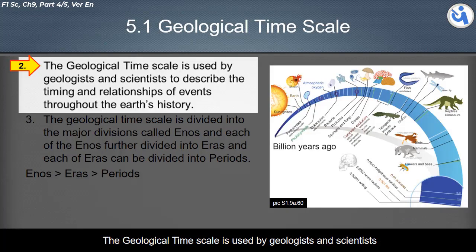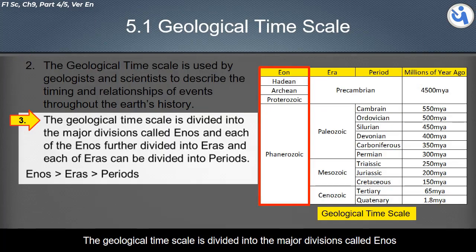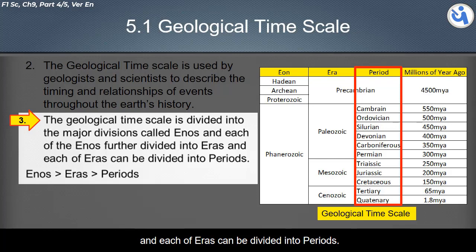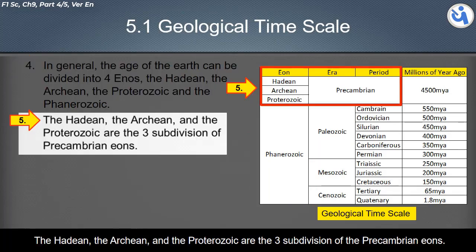The geological time scale is used by geologists and scientists to describe the timing and relationships of events throughout the earth's history. The geological time scale is divided into major divisions called eons, and each eon is further divided into eras, and each era can be divided into periods. In general, the age of the earth can be divided into four eons: the Hadean, the Archaean, the Proterozoic, and the Phanerozoic. The Hadean, Archaean, and Proterozoic are the three subdivisions of the Precambrian eons.